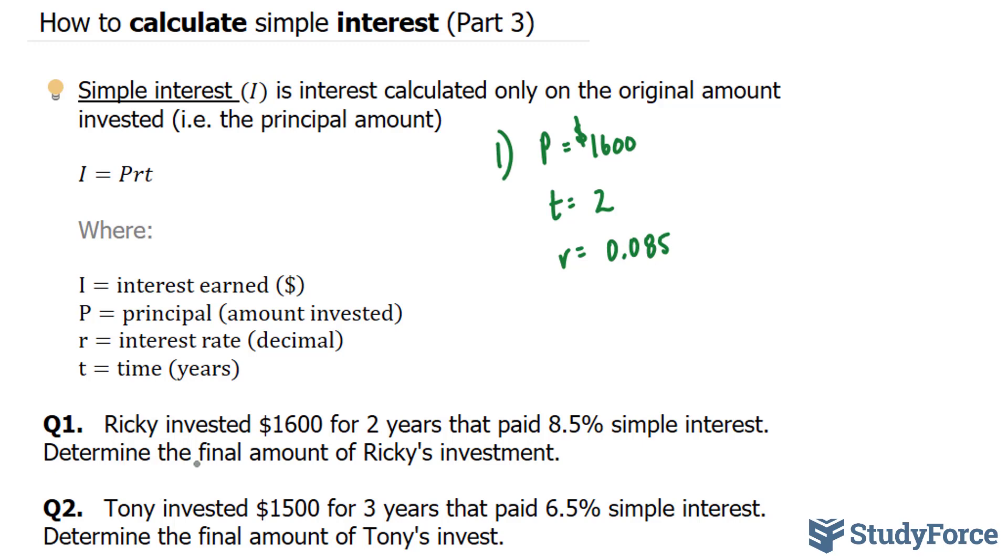And this time they want us to determine the final amount. So whatever value we get for I, we're going to add it to 1,600.